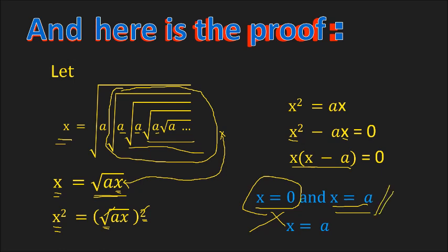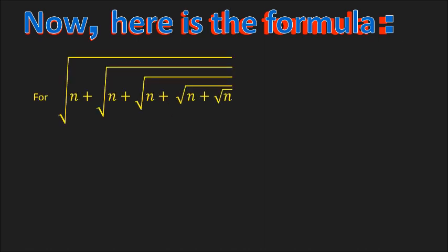So therefore, for anything of the form square root of a times the square root of a repeated infinitely, the answer is just a. Now here is the formula for the second case. For the square root of n plus the square root of n plus the square root of n, repeated infinitely many times, the answer is given by (1 plus the square root of 1 plus 4n) all over 2.